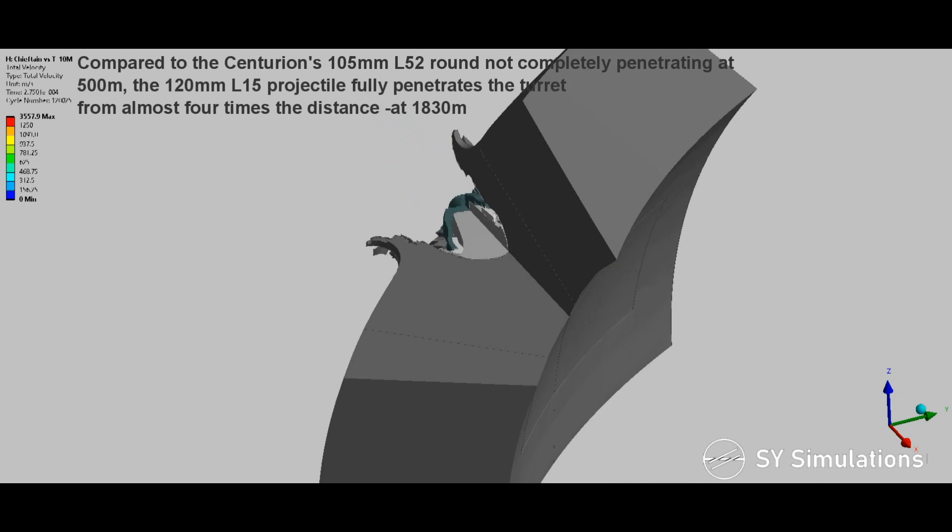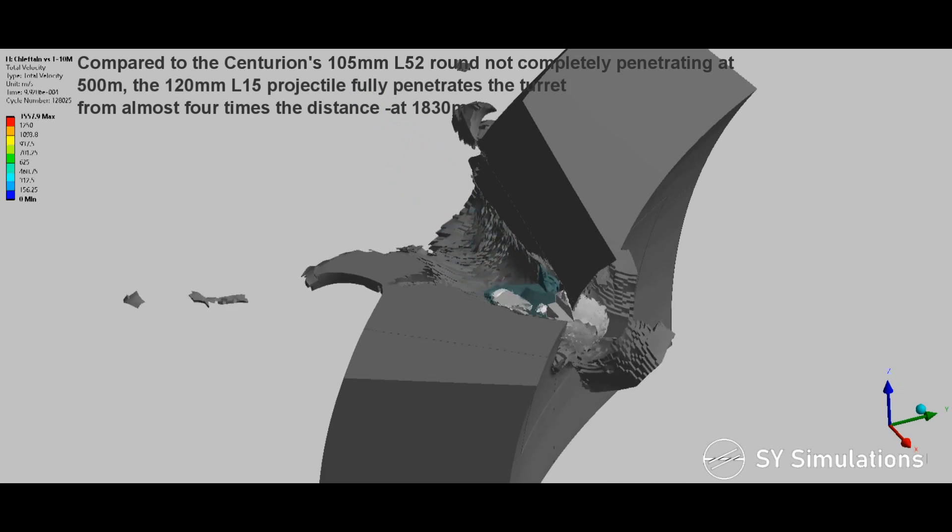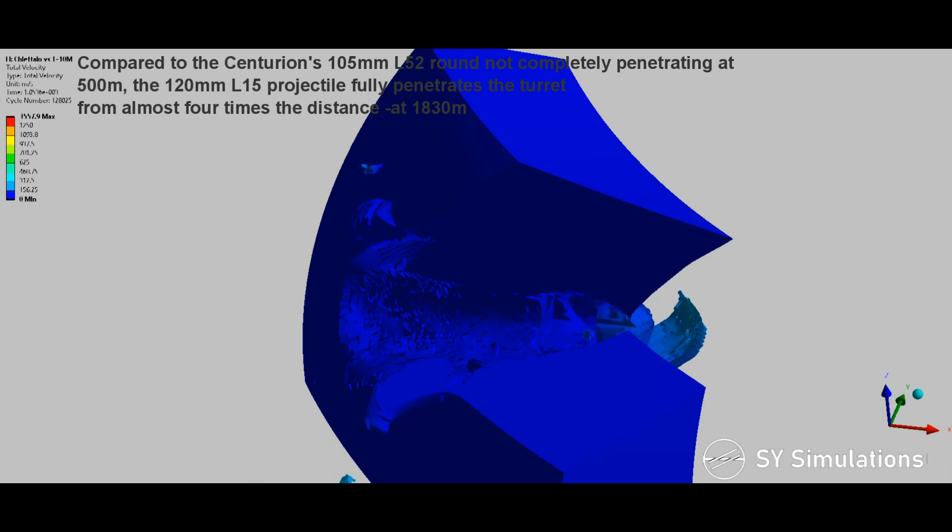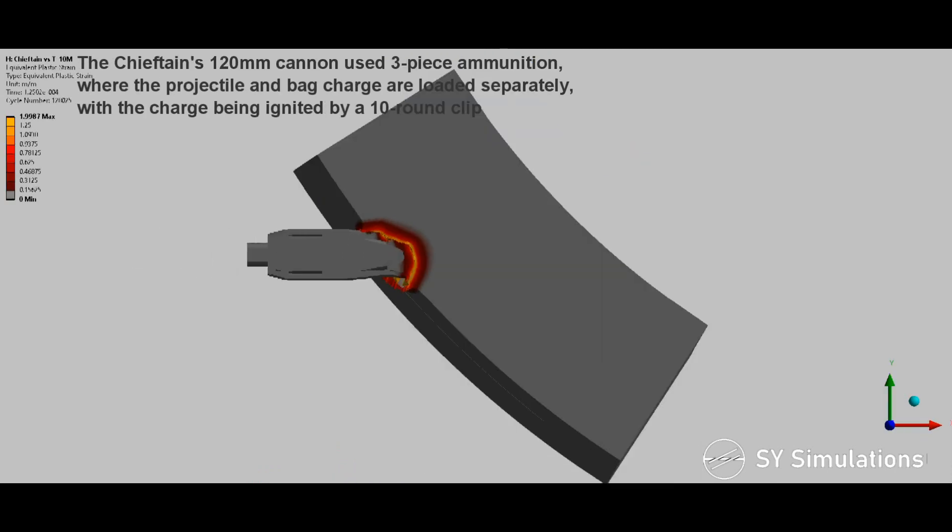Compared to the Centurion's 105mm L-52 round not completely penetrating at 500 meters, the 120mm L-15 projectile fully penetrates the turret from almost four times the distance at 1,830 meters.